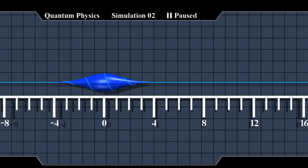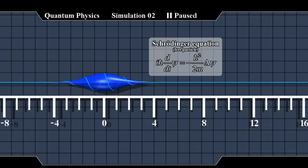The wave function evolves with time according to an equation called the Schrodinger equation. This particular wave shape evolves by gliding to the right.